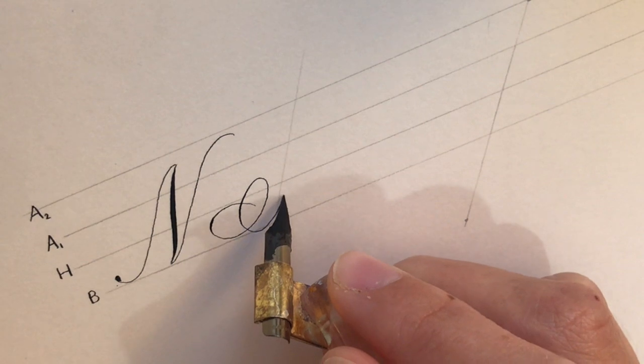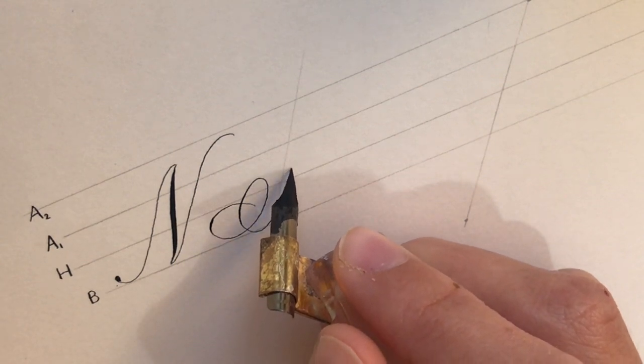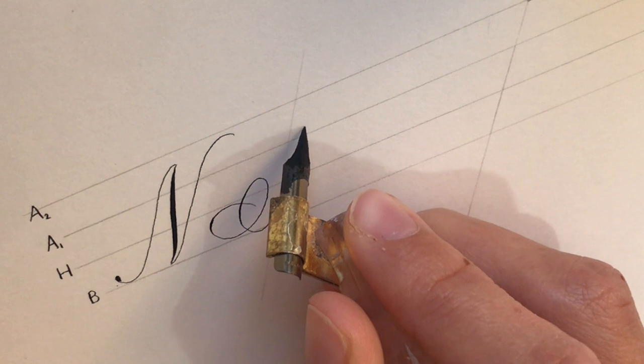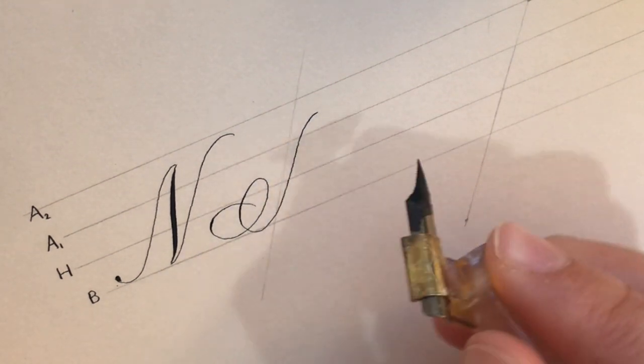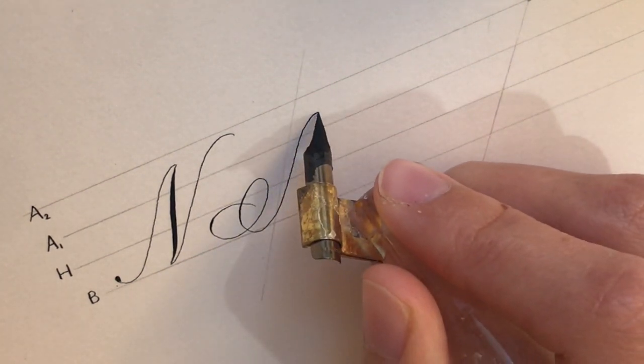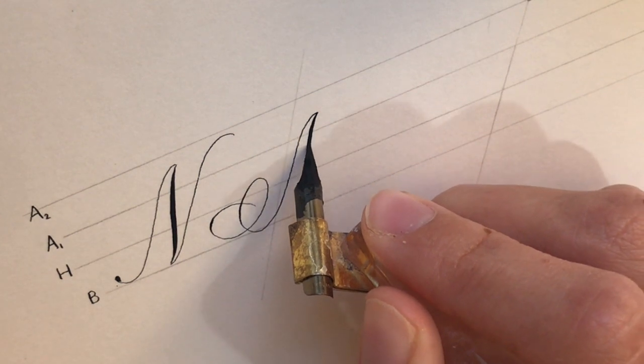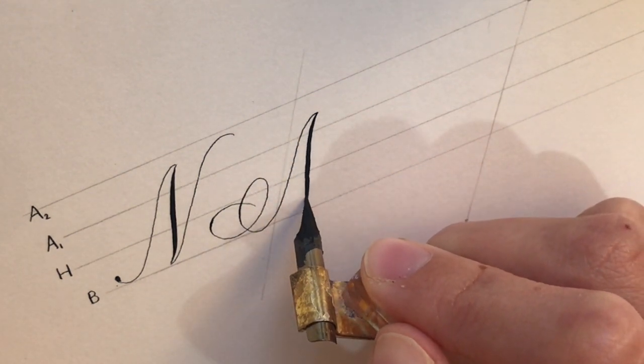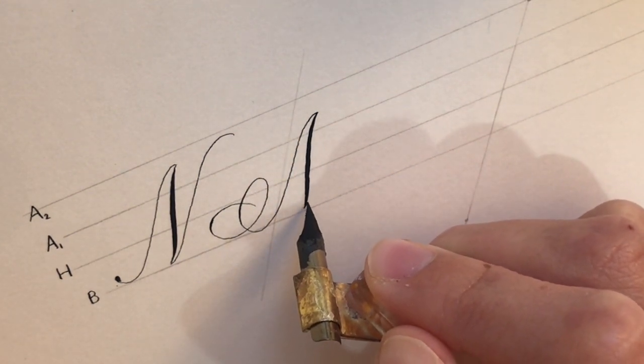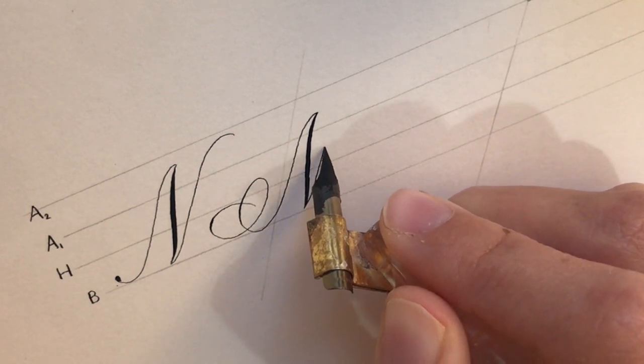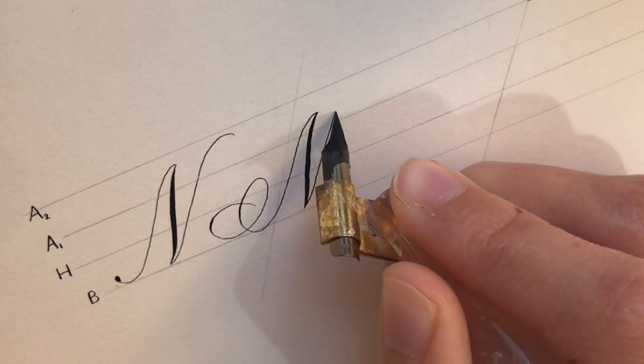Then we'll draw a hairline up along the 55 degree slant line, come back down again with that swelled stroke, lift, and then come back up with an upstroke hairline.